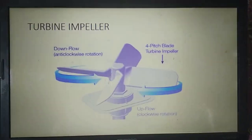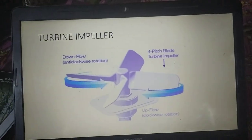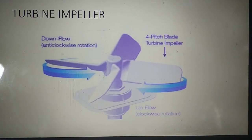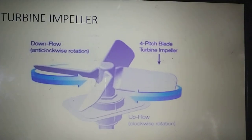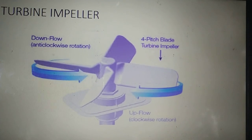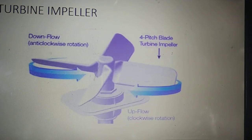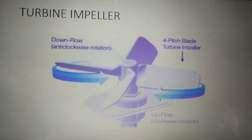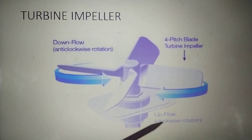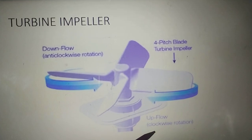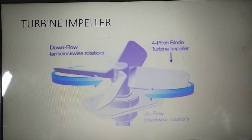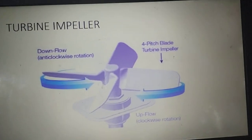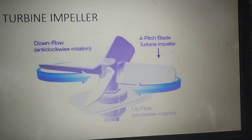This is a turbine impeller where the blades hang perpendicularly — around 60-degree fixtures. You can see there is upflow and downflow. Downflow goes anti-clockwise and upflow goes clockwise. This gives more turbulence in the media. This is a 60-degree fixture of the blades.